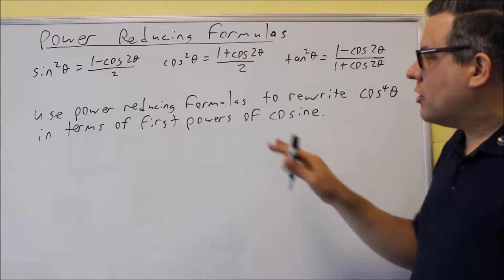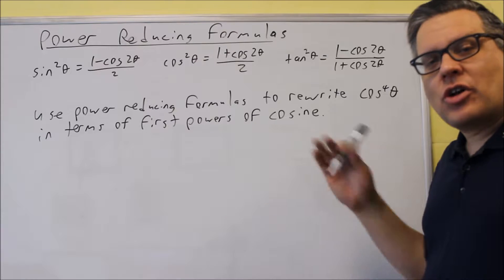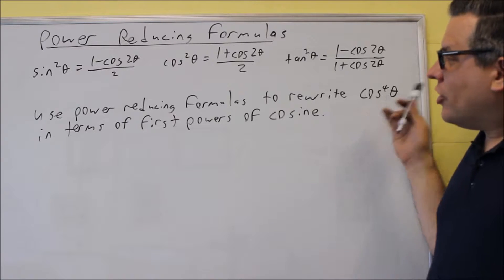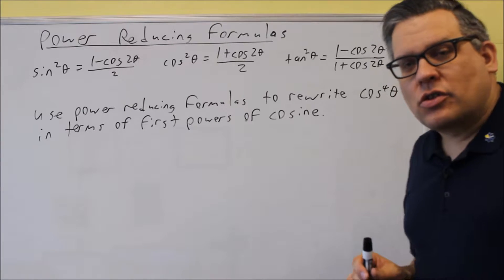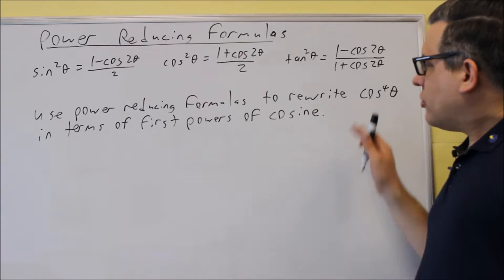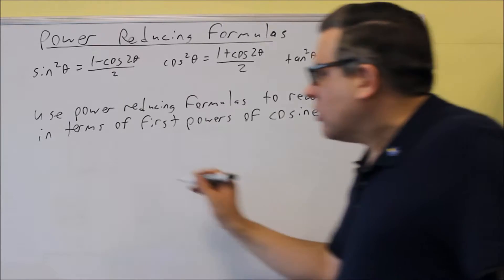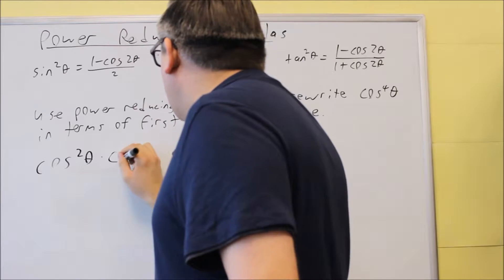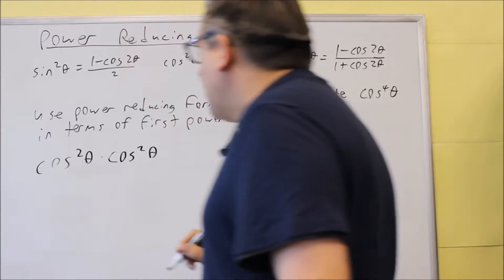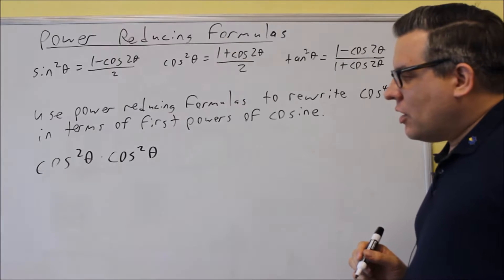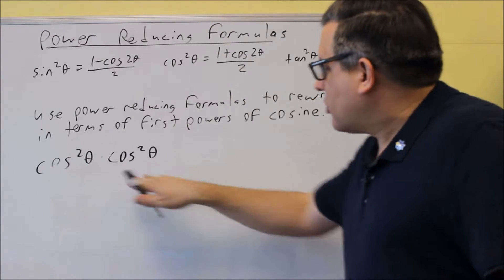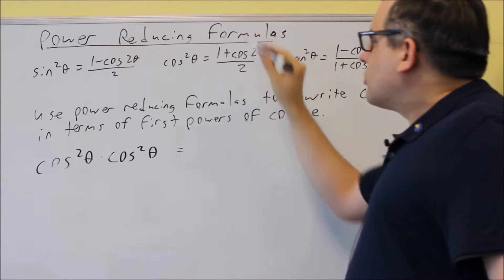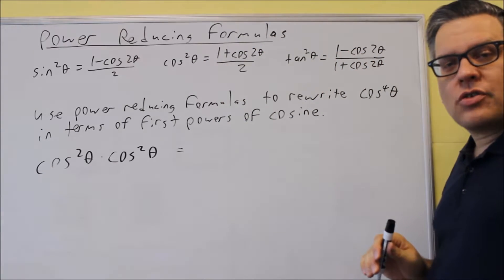We have to use these formulas and take it down to where we have cosine to the first power. It'll be exactly the same as cosine to the fourth, just written in terms of first powers. The first thing we want to do is think of cosine to the fourth power as cosine squared theta times cosine squared theta. That's what we're going to do first — having cosine squared times cosine squared allows us to use two different power reducing formulas.